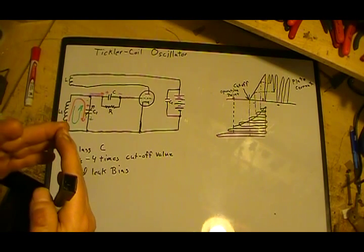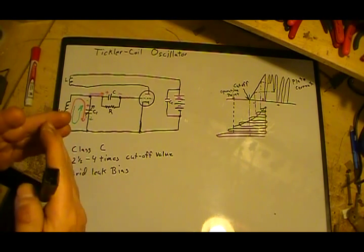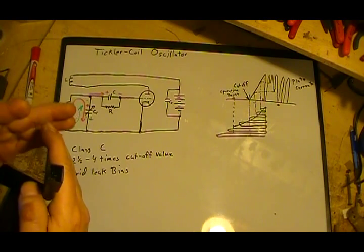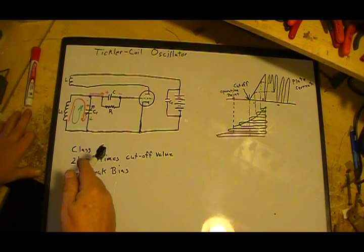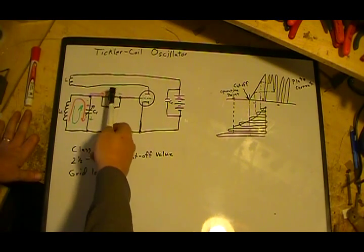What that means is, with the resistor hooked to a capacitor, whether it's in parallel or in series, depending on its size, it will slow down the speed at which the capacitor discharges.